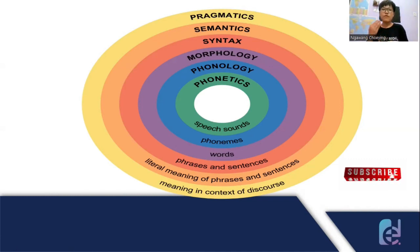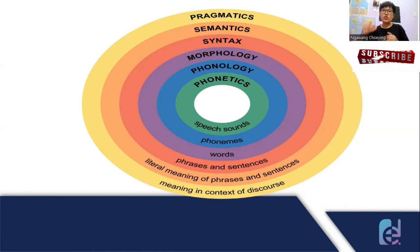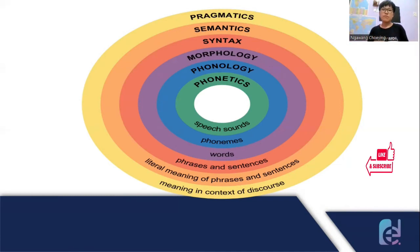Then comes syntax. Syntax is the structure of a phrase or sentence. For example, using the word 'book' to construct a sentence in a meaningful way — that structure is called syntax. Then comes semantics and pragmatics. Semantics is the meaning of a word — for example, the meaning of the word 'book.' Pragmatics is the meaning of a word in a given situation.